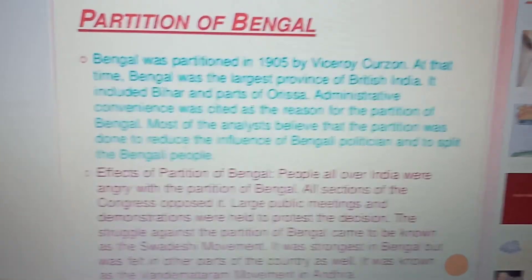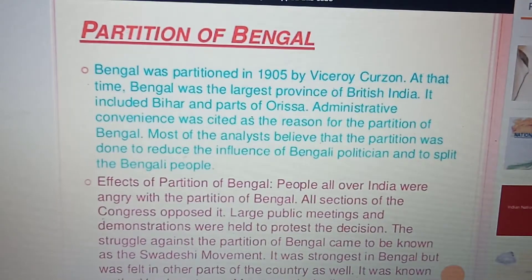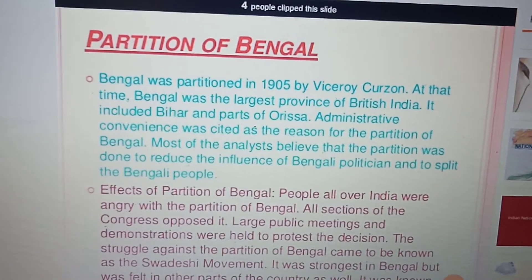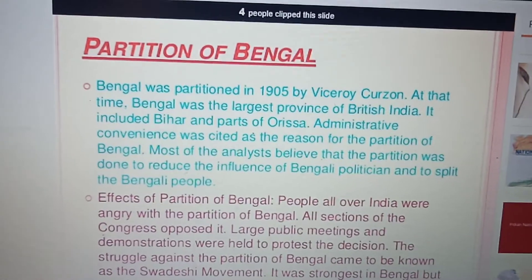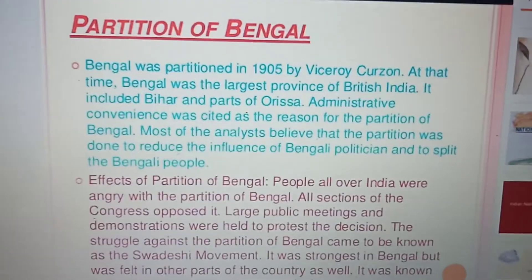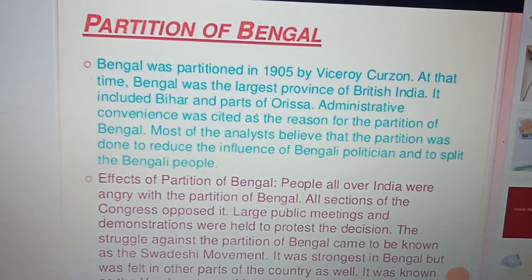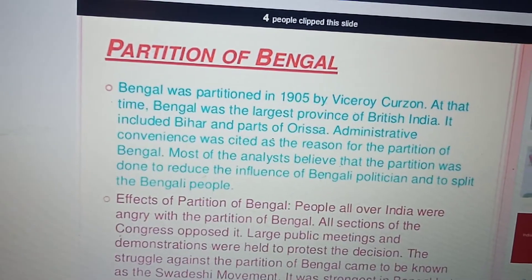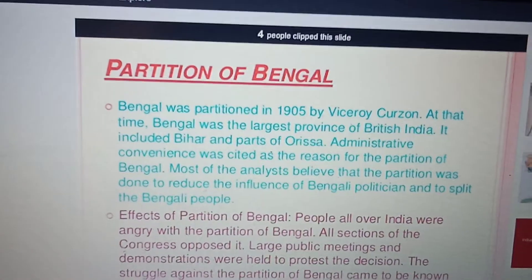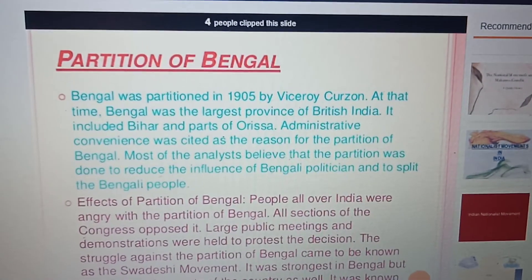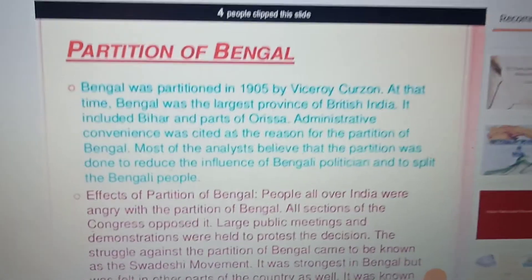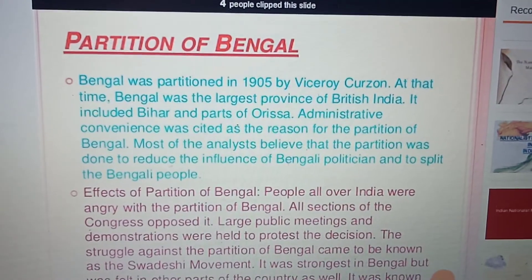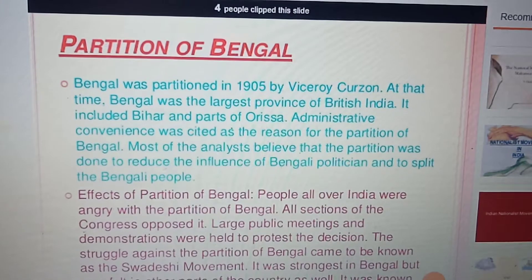As the radical movement grew stronger, the British began to look for ways to break the unity among Indians, so that Indians could not work against them. They tried to do this through the partition of Bengal and by sowing seeds of communalism among the Indian people. They also motivated Muslims to form a permanent political association of their own.